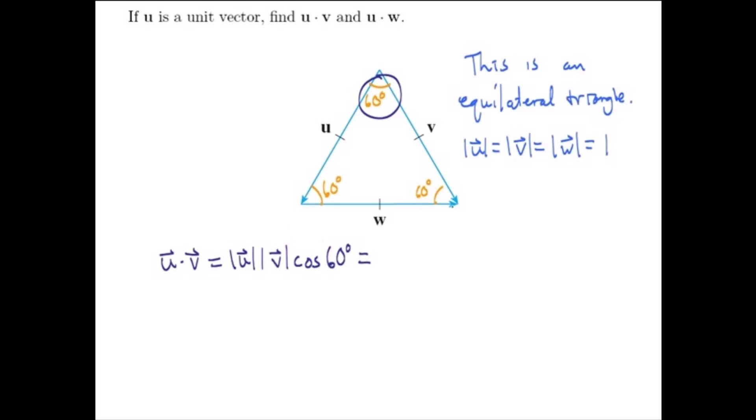u and v are unit vectors, so their length is 1. So we have 1 times 1 times the cosine of 60, which is 1/2.